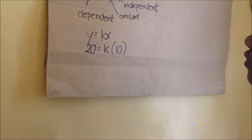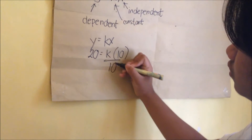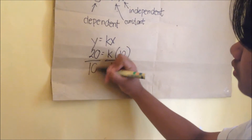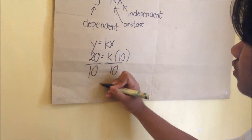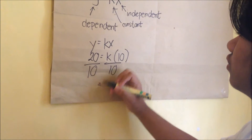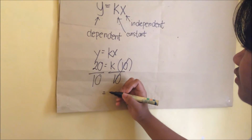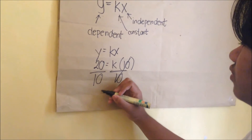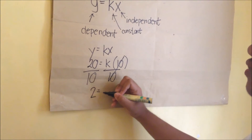Divide both sides by 10. And the k10 divided by 10 will be cancelled. Then divide the 20 by 10. And we will get the value of the constant, which is 2.